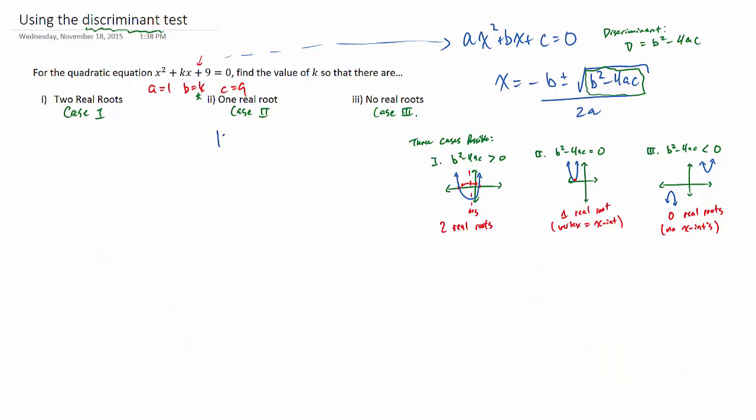So if that went too quickly, remember to pause it. Go back and follow the steps. So our answer to that one is that if k is plus or minus six, we're good.